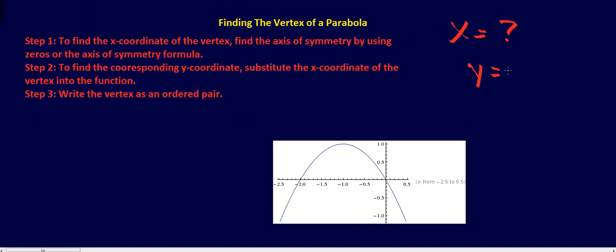And then we're going to figure out what y is. So y is going to be some number. And finally, we're going to write it as an ordered pair. So the final answer is going to look something like this.